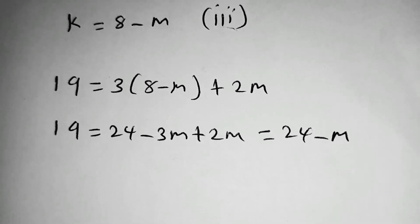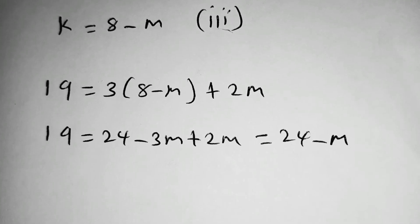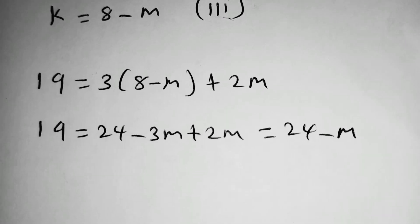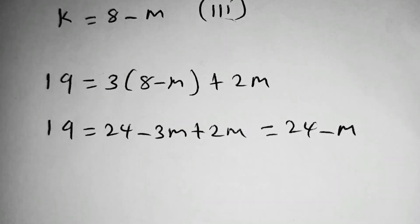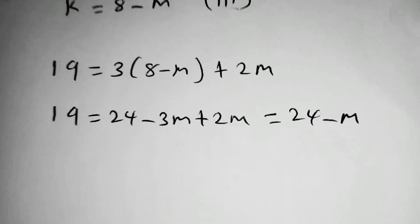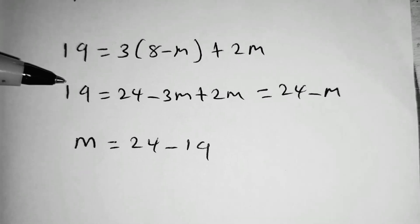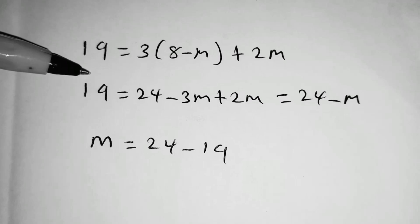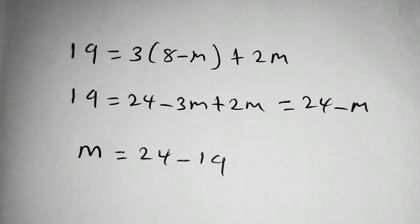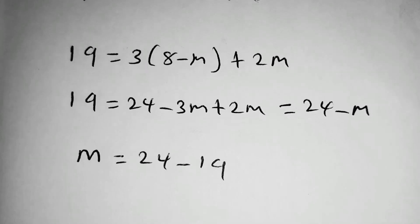It follows that 19 is equal to 24 minus M. So, we can make M positive by adding M to both sides and taking 19 to the right hand side to obtain M as equal to 24 minus 19. So, M will be equal to 24 minus 19, which is equal to 5.